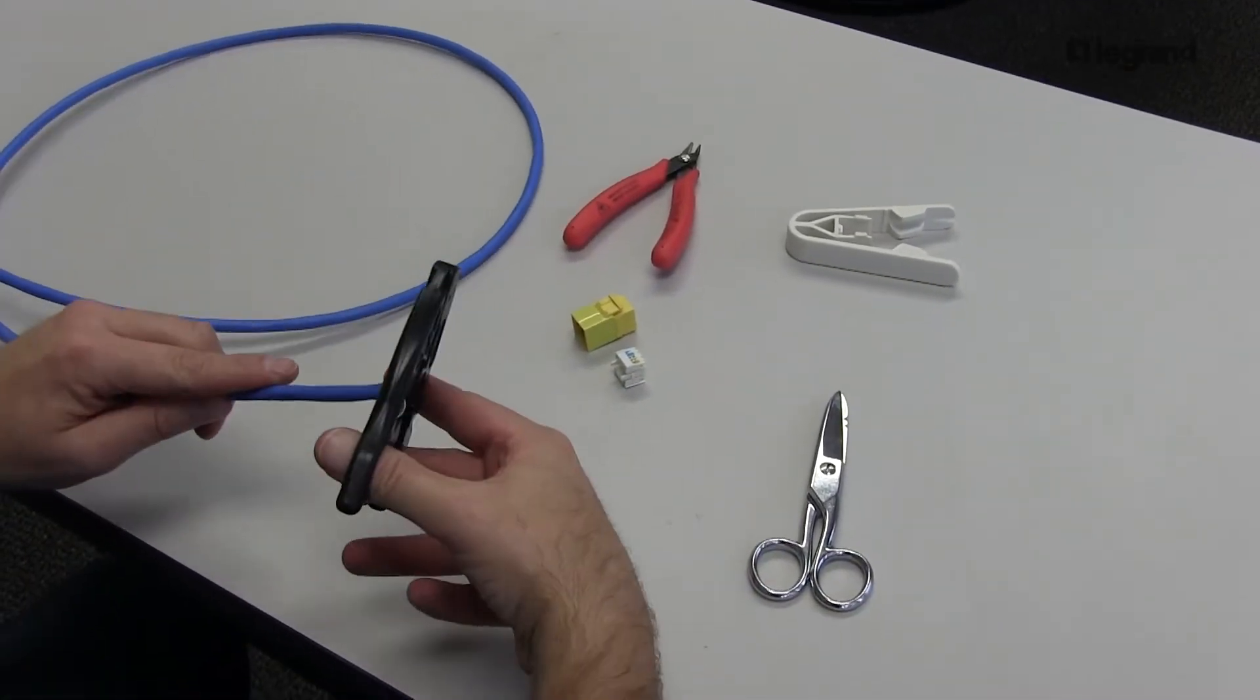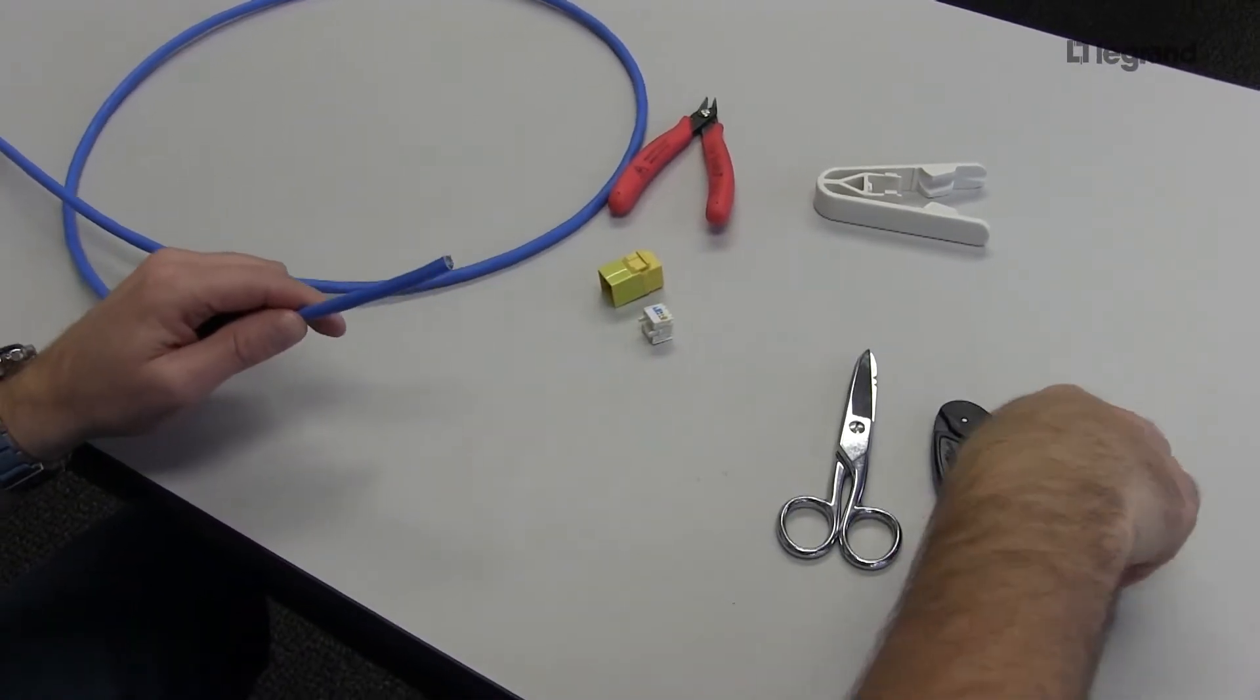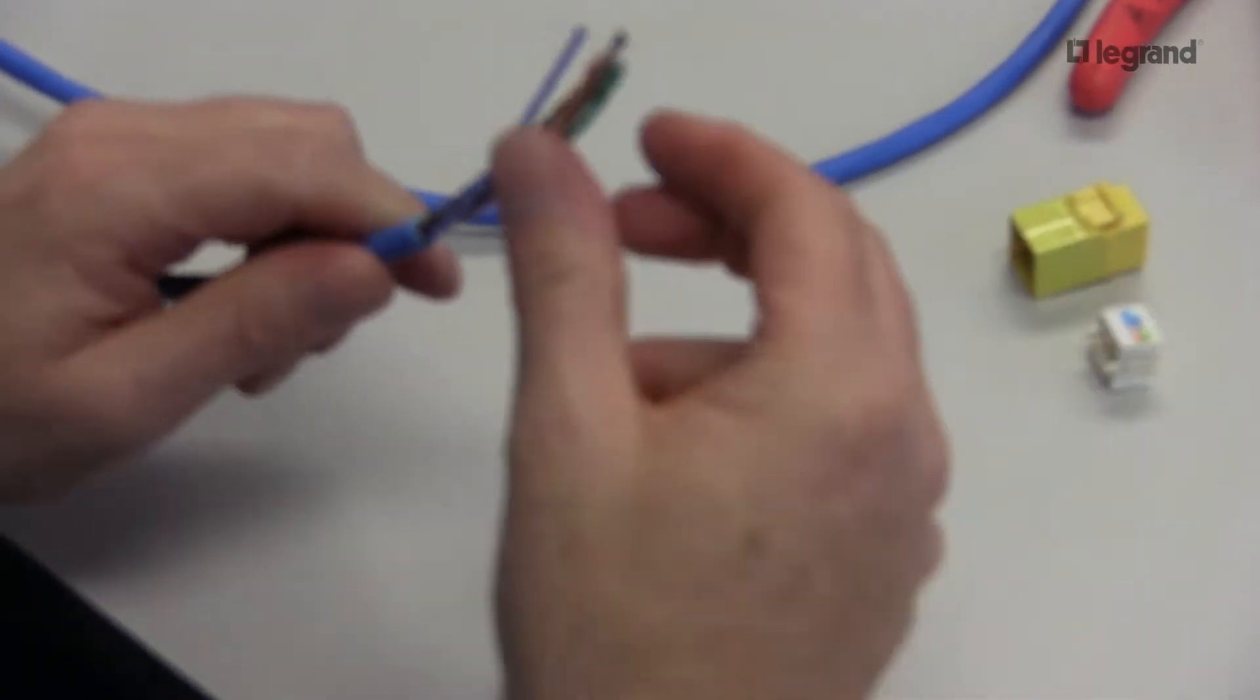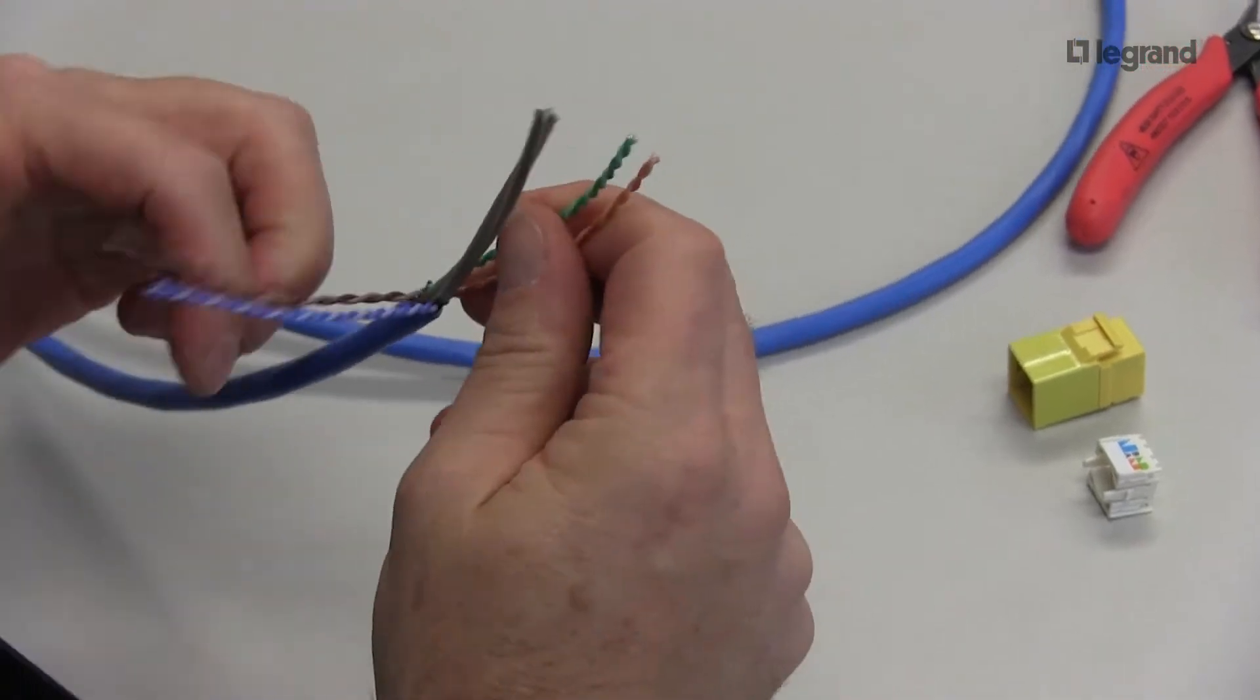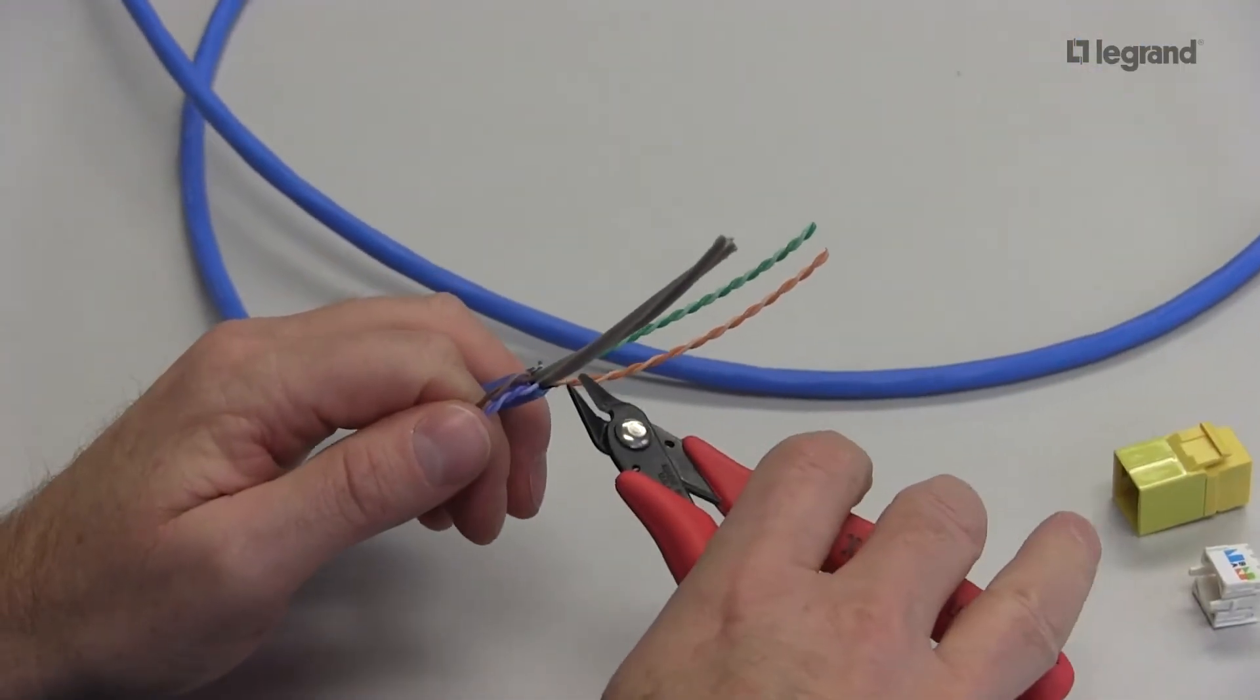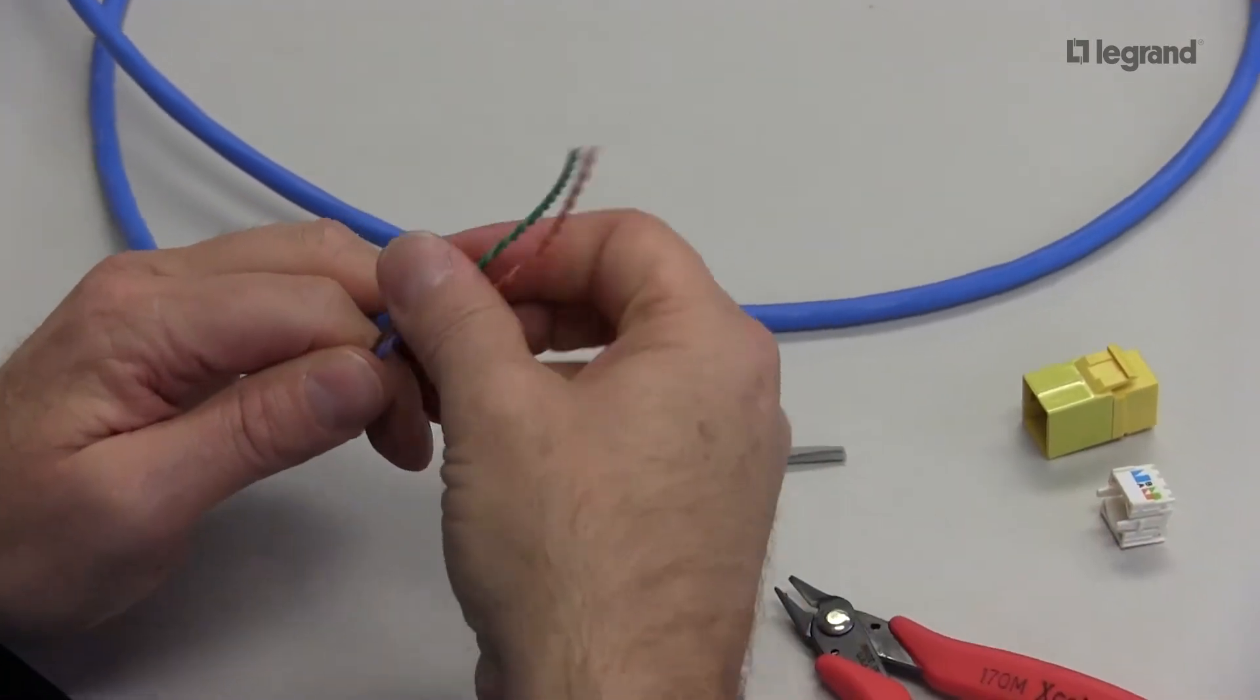First thing I'm going to do is cut back two to three inches of my cable. Then I will cut my center spline flush. Now you can do that with your scissors, but I also like my angle cutters, so I'll show you that. It's nice and flush to the bottom.